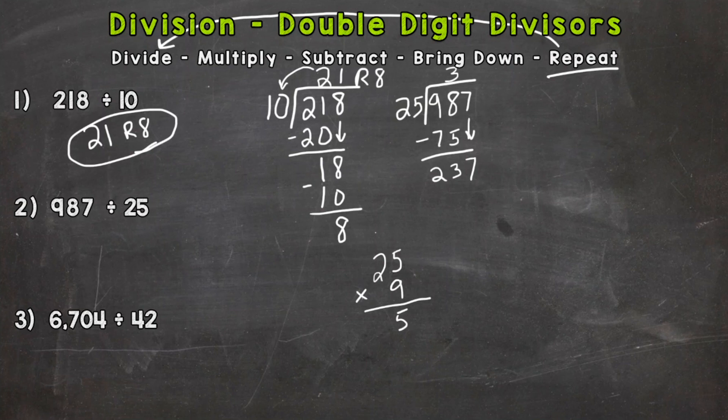So 9 times 5 is 45, carry the 4. 9 times 2 is 18, plus that 4 we get 225, and that did work out. That's as close as we can get to 237. So we put our 9 up there above the 7, and then we come back around and multiply: 9 times 25 is 225. Subtract: 7 minus 5 is 2, 3 minus 2 is 1, and 2 minus 2 is 0. So 39 remainder 12.